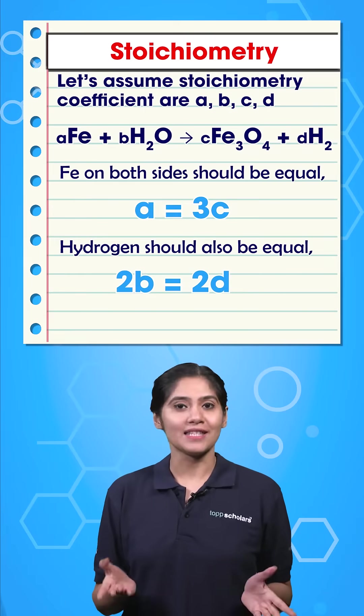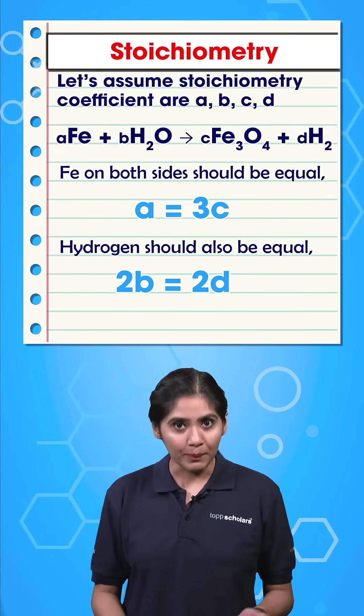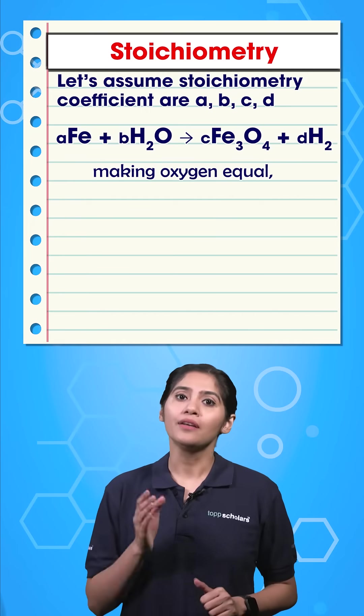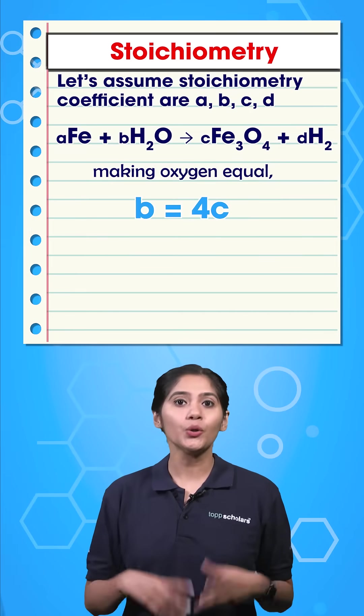Hence, 2B is equal to 2D. And making oxygen equal, we have B is equal to 4C.